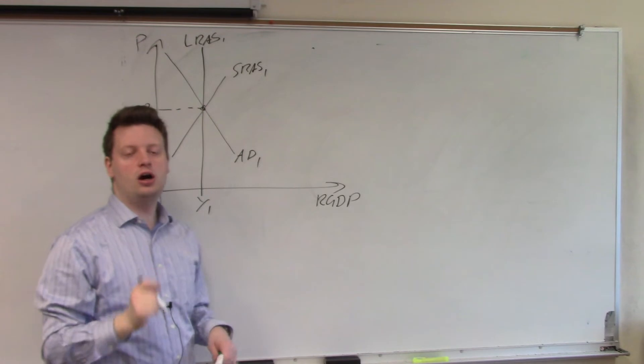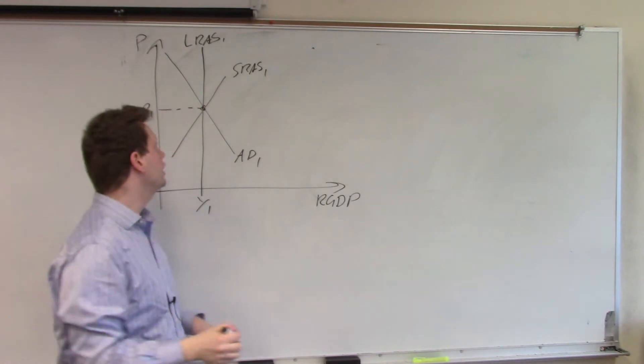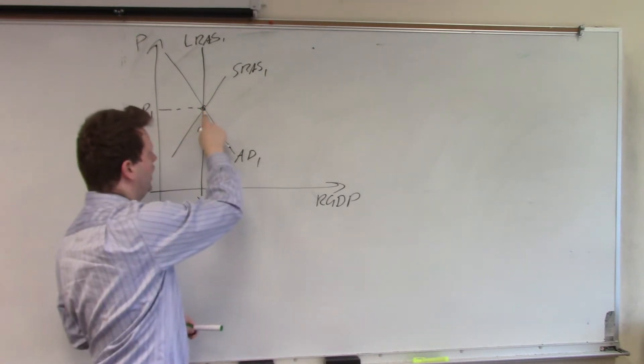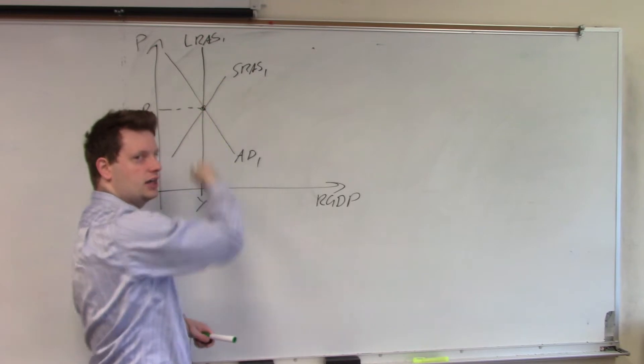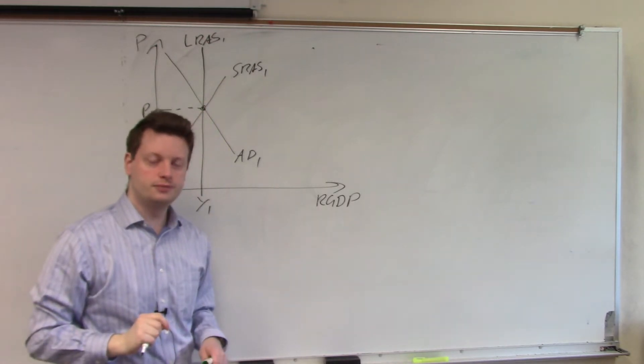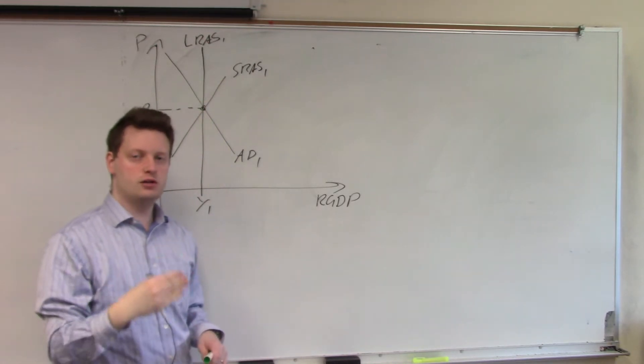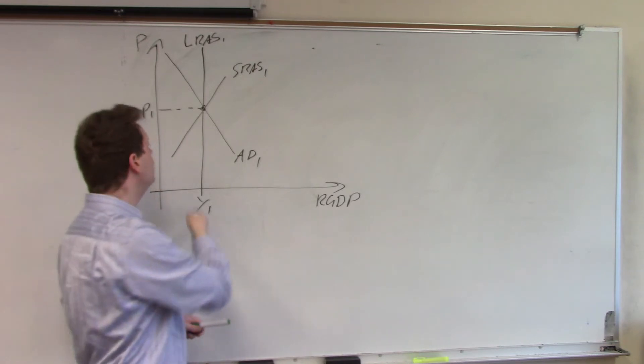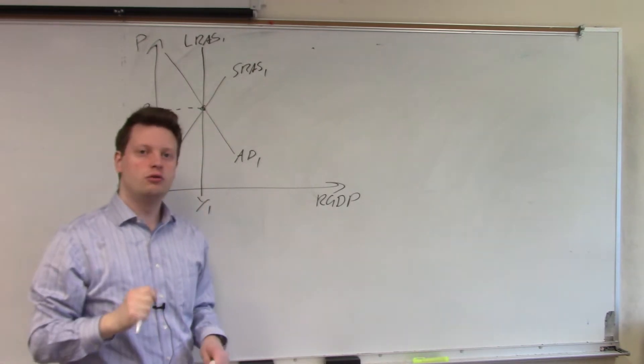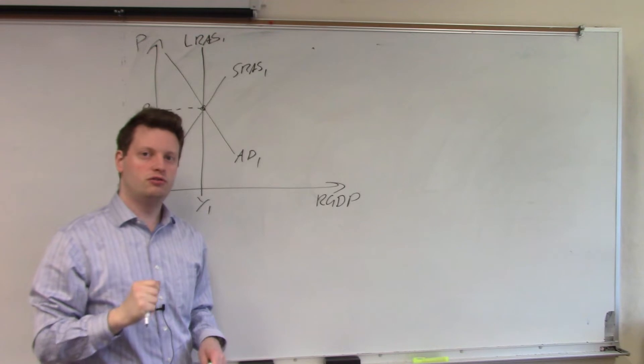Let's assume we are at equilibrium. That means we have all three lines intersecting at the same point. So, we are at potential which is captured by long-run aggregate supply which means we are also at full employment.